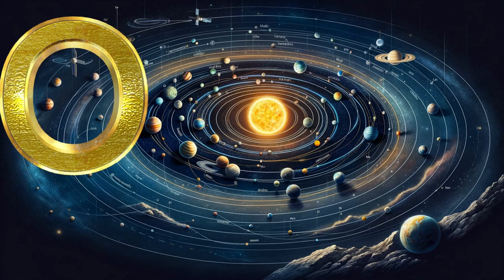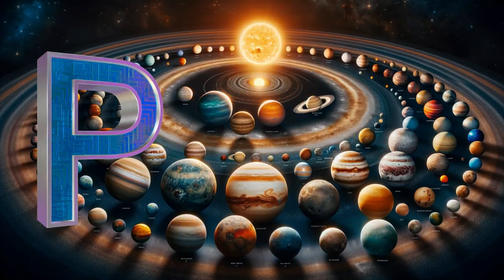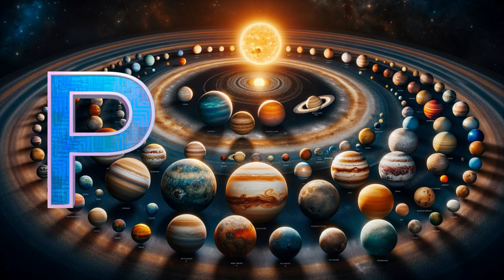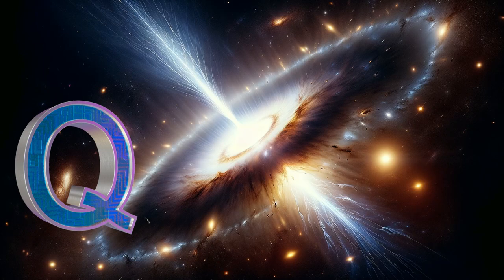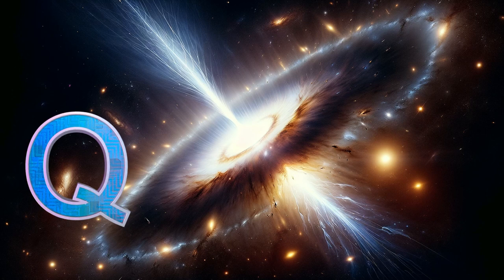P is for planets, in the solar system's glow. Q is for quasar, bright and far.